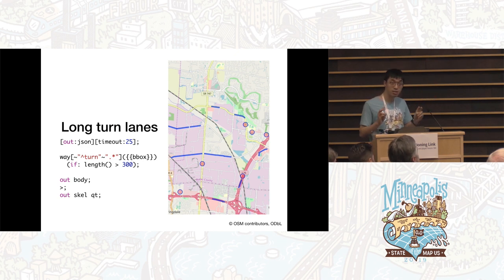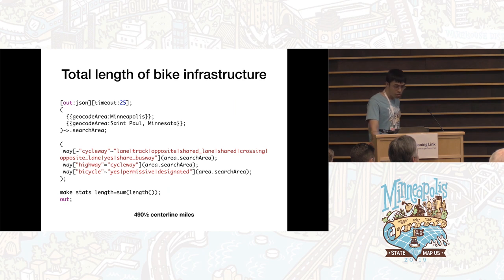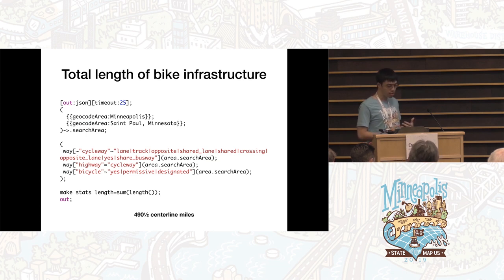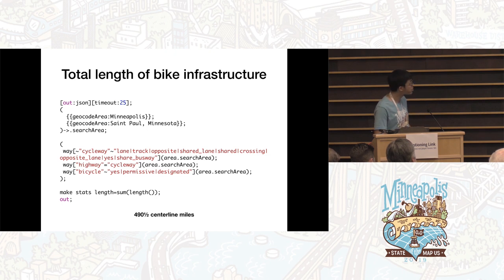There are actually a number of these evaluators you can use, and they're documented in a link I'll show you later. Overpass also has built-in statistical features handy for alternative outputs. For example, instead of outputting all the bike lanes and sharrows themselves, how about summing all their lengths and outputting the total in JSON format? It turns out there are just shy of 500 centerline miles of bikeways mapped in the Twin Cities.